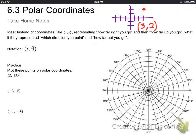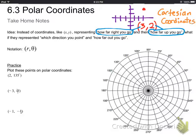That means the 3 means how far right you go, and the 2 means how far up you go, so that red dot there is where 3, 2 shows up. We call that Cartesian coordinates, that's the coordinate system you guys are used to.